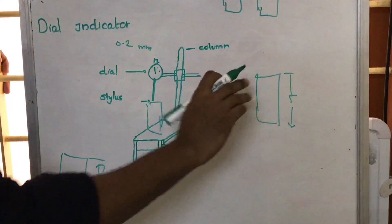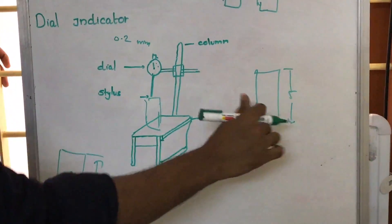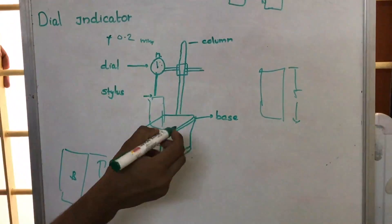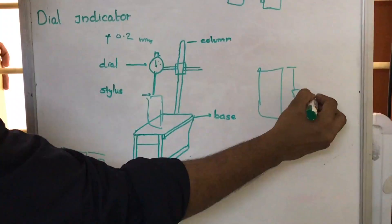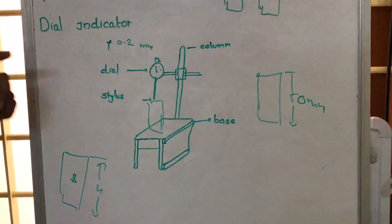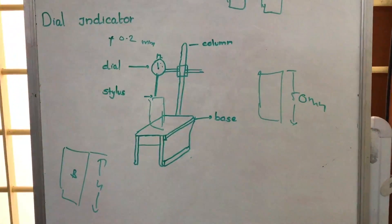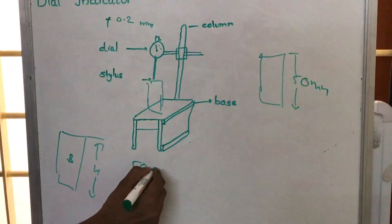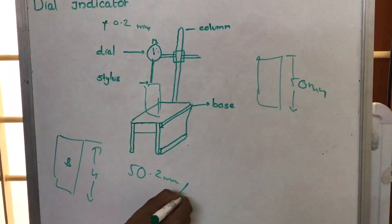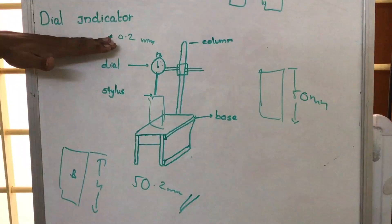then we already have the height is 5 mm. To which if it is positive 0.2 mm, then 5 cm means 50 mm. So 50 plus 0.2. So we have obtained this height as 50.2 mm. So this is how we make use of this dial indicator